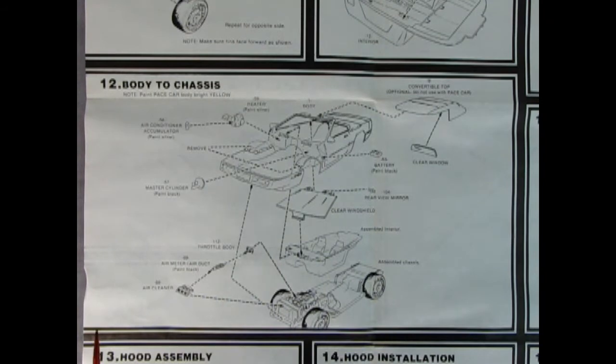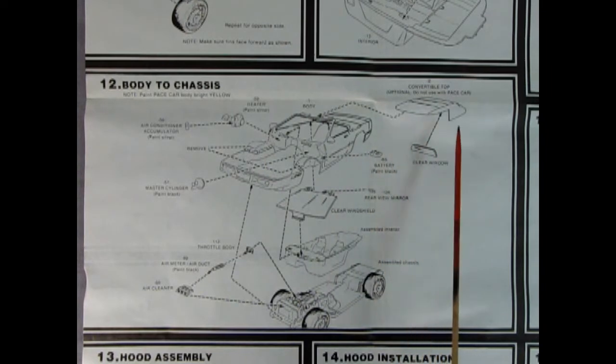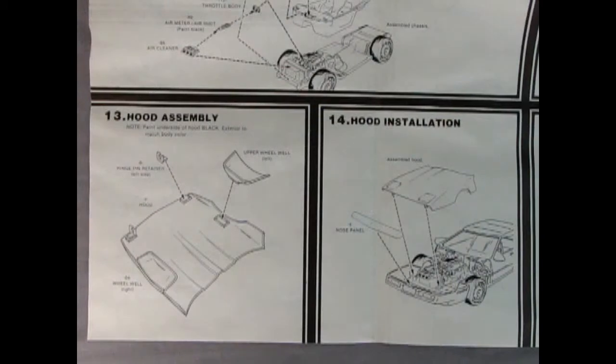Panel twelve is the body to chassis assembly. It says to paint the pace car body bright yellow, and even though it's molded in yellow, paint on top is always better, trust me. Here we have our heater and air conditioner accumulator - I really wish they put this in the '85 kit. There's our master cylinder that goes in. You've got to remove the tops of these things. There's our convertible top - it says optional, do not use with pace car. The clear window, the battery. You do get a clear windshield here and a rear view mirror. Then we've got our interior assembly, master cylinder going in place. Once this all clicks down, you can put the throttle body, air meter, and air cleaner all together and just finish up your Corvette.